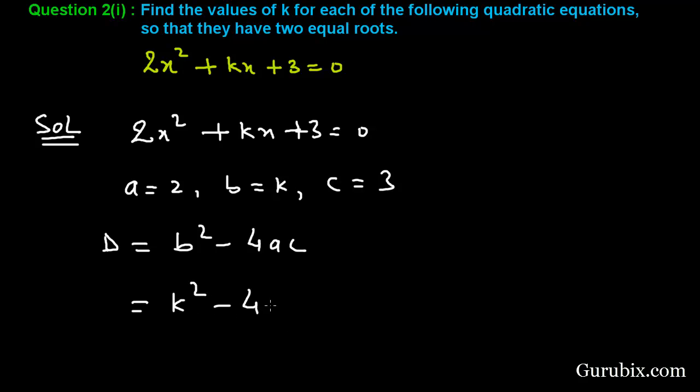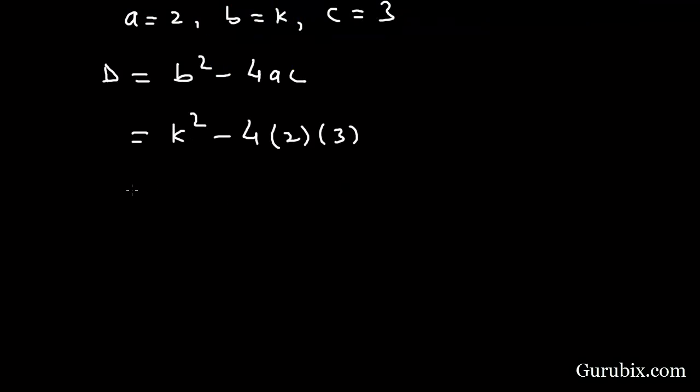a is 2, c is 3, so D = k² - 24. Since the roots are real and equal, therefore D will be equal to 0.